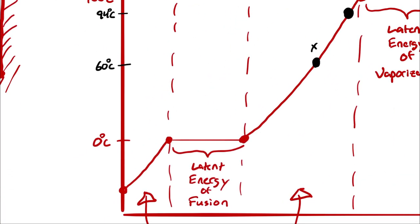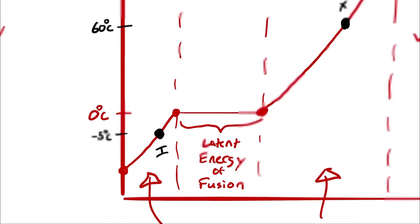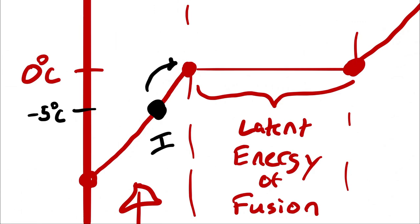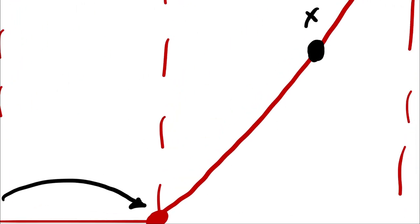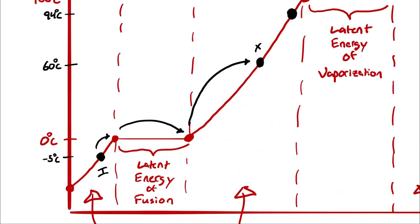But for our ice, we have a slightly more complicated situation, because the ice begins at negative 5 degrees Celsius, which I'll call state point I. Going from I up to X is not just a matter of plugging in the specific heat capacity for that temperature range. I have to analyze from I up to zero degrees Celsius using the specific heat capacity of the ice, then use the latent heat of fusion to get across the phase change, and then use the specific heat capacity of liquid water to get from the right side of the latent energy of fusion up to state point X.